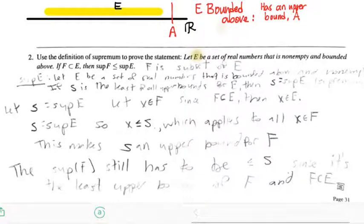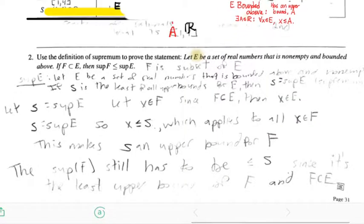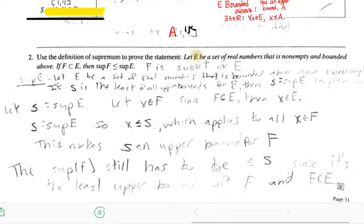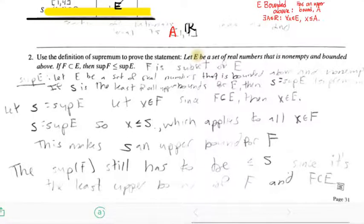So to complete the definition, this means that there exists a real number A, such that for all elements, let's call them little x belonging to E, x is less than or equal to A. So that's what it means for the set to be bounded above. I'm going to keep this observation sort of in our pocket as we talk more about this. So we'll sort of keep that off to the side. So that's the first thing.